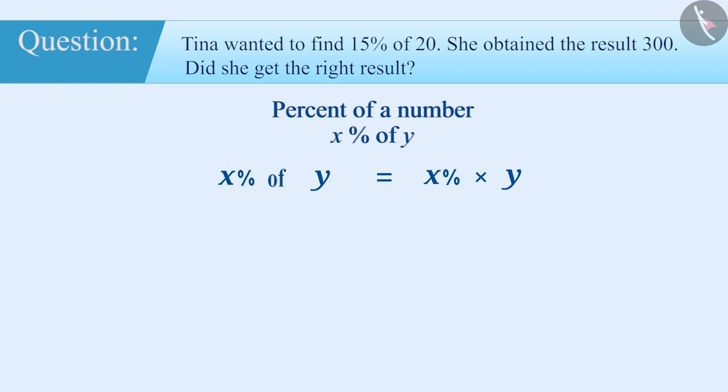Here, Tina ignored the percentage sign in order to get 15% of 20 and multiplied 20 by 15 and got the result 300, which is the wrong answer.